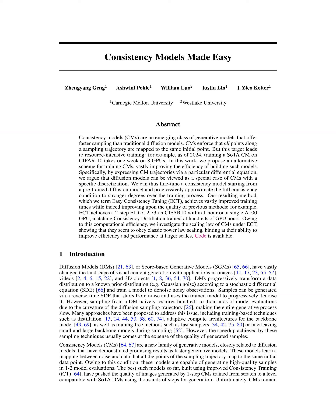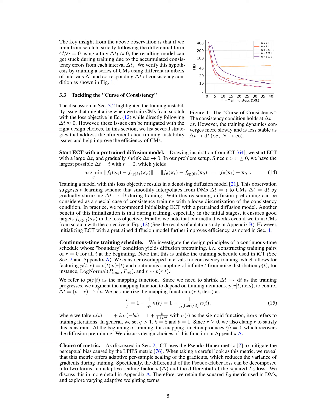ECT works by first initializing with a pre-trained diffusion model, which is a special case of consistency models, CMs, with a loose form of the consistency condition. This initialization ensures good targets in the loss objective, especially in the initial stages of training. ECT then gradually shrinks the time discretization from the largest possible ΔT equals T to ΔT equals DT during training, smoothly transitioning from diffusion models to consistency models.